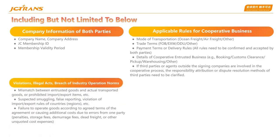Violations include: illegal acts, breach of industry operation norms, mismatch between entrusted goods and actual transported goods, or prohibited import/export items. Suspected smuggling, false reporting, violation of import/export rules of countries or regions. Failure to operate goods according to the agreed terms, or causing additional costs due to errors from one party — such as penalties, storage fees, demurrage fees, dead freight, or other unexpected cost expenses.